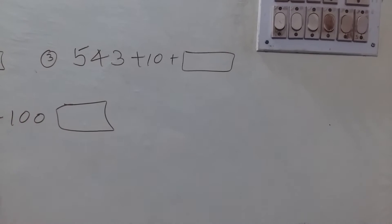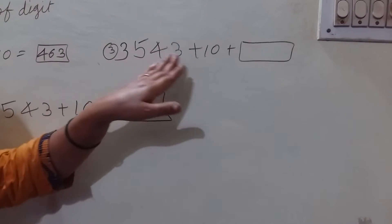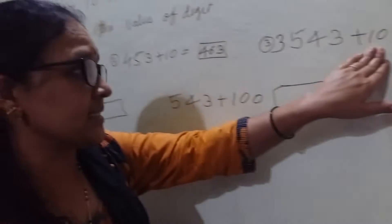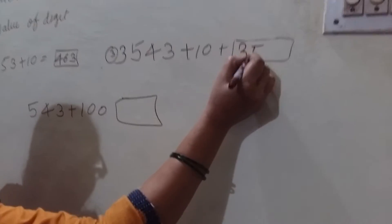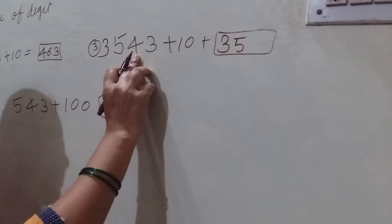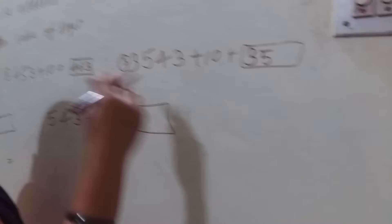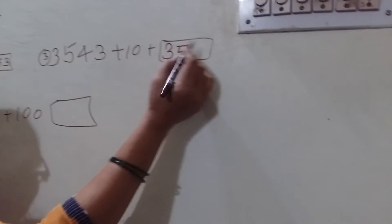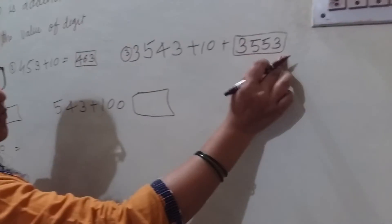Now, 3543 is there. You have to change only the tens place. So 3543 becomes 3553. The hundreds, thousands, and ones places remain as they are — only the tens digit changes. Why? Because we are adding 10, so we change the tens place. The answer is 3553.